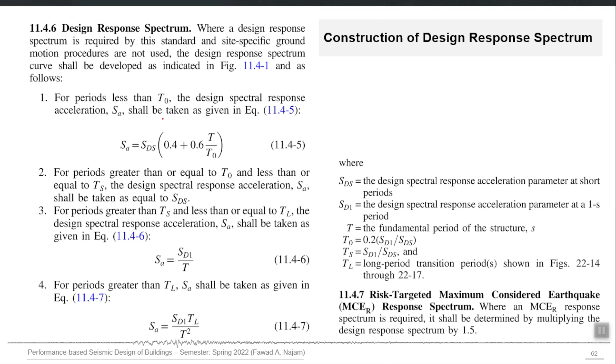This is the equation for time period less than T0, which means the ascending line. It is a linear equation. You first calculate T0 which is 0.2 times SD1 over SDS. TS is actually you can say 5 times of that T0. Actually SD1 over SDS is TS and 0.2 of that is T0.